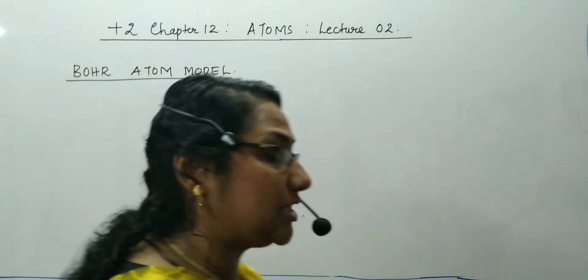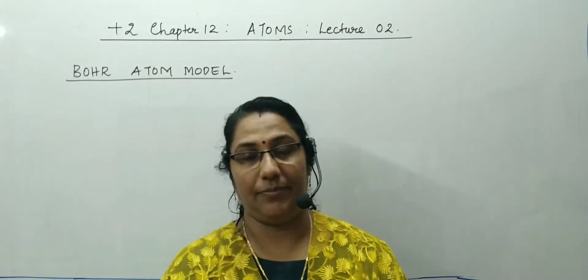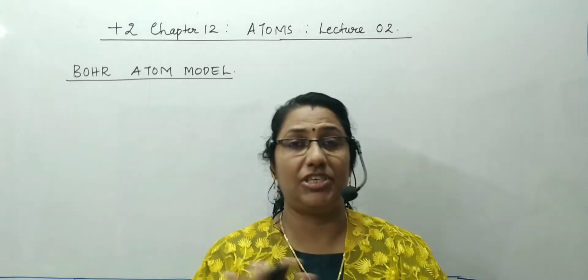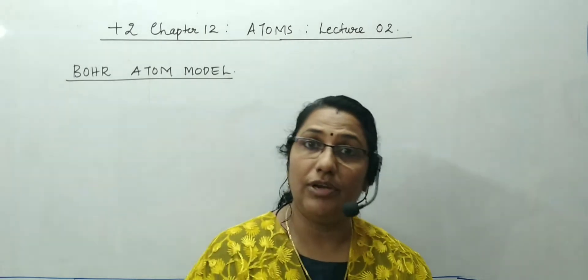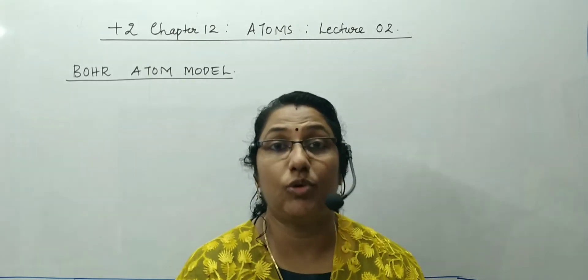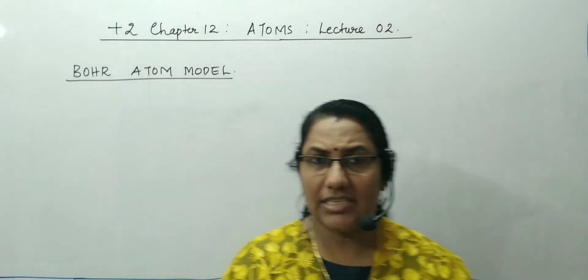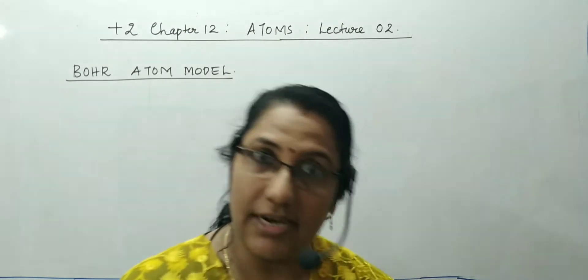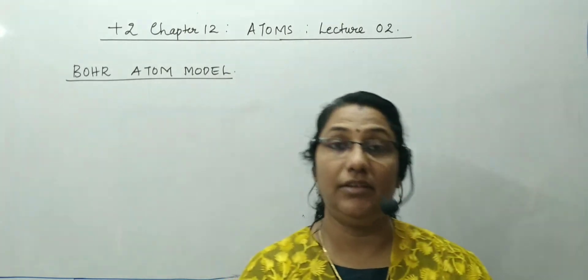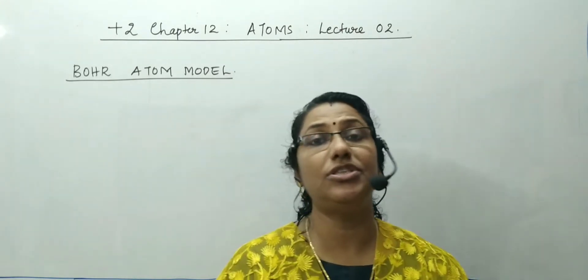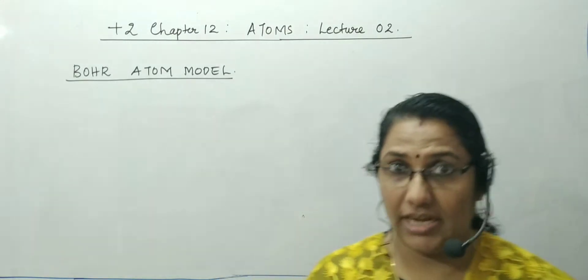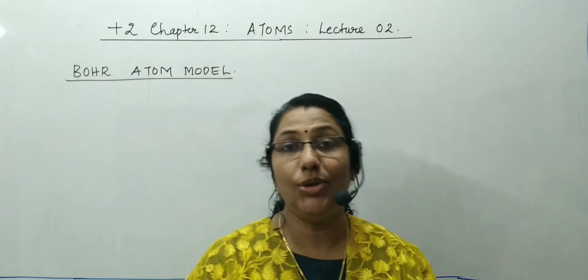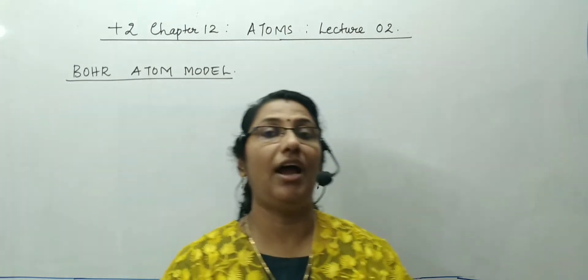Today we are going to discuss about Bohr's atom model. In the previous class we discussed Rutherford's atom model. But there were certain drawbacks in Rutherford's atom model. He had conducted an experiment called the alpha scattering experiment. Rutherford's nuclear model of atoms could not explain the stability of atoms, and also the discrete spectrum of atoms is not explained by Rutherford's atom model. After studying Rutherford's nuclear model of atoms in detail, Bohr modified the nuclear model of atom.